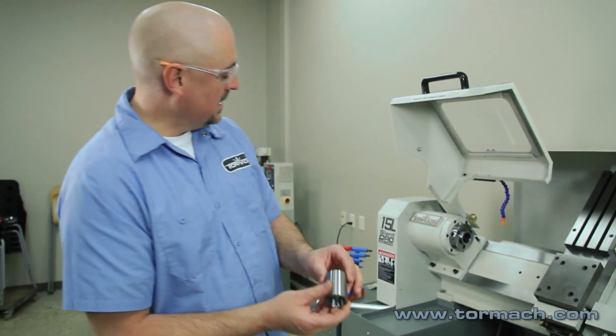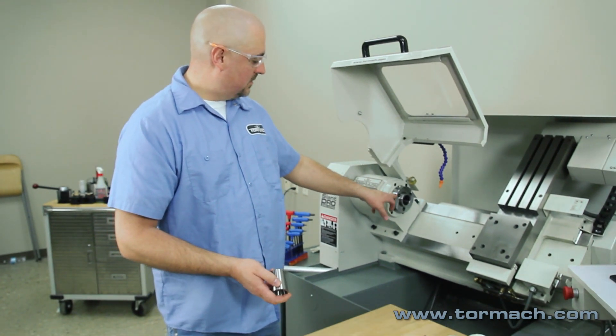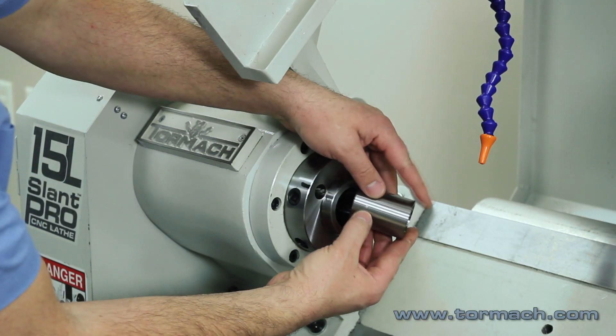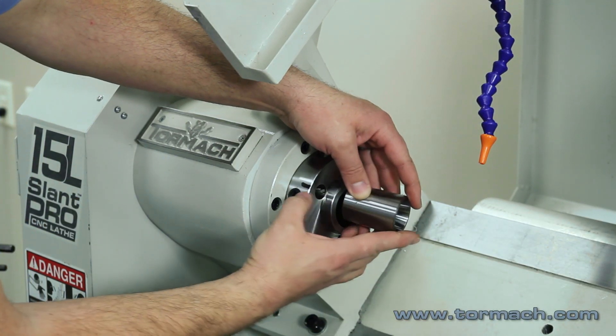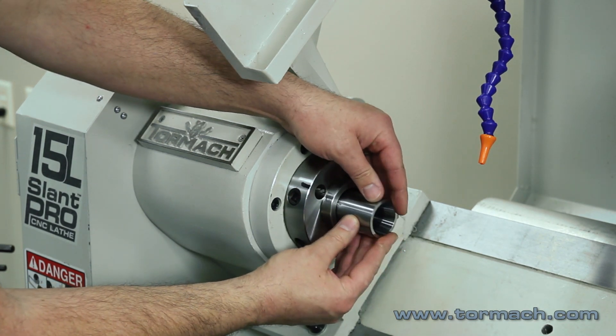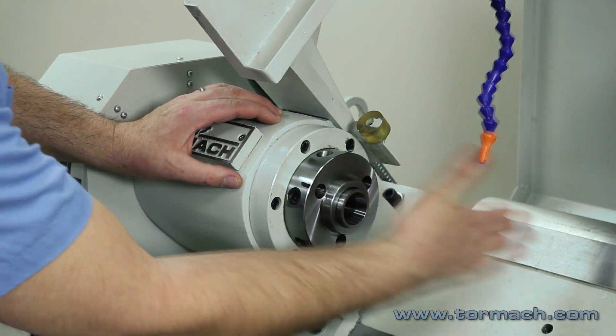So this doesn't have any marks on it yet. We put a black mark on here when we put the three-jaw chuck on. I'm just going to line this key up with this witness mark that we had for the three-jaw chuck. Close. And then just give it a tap to send it home.